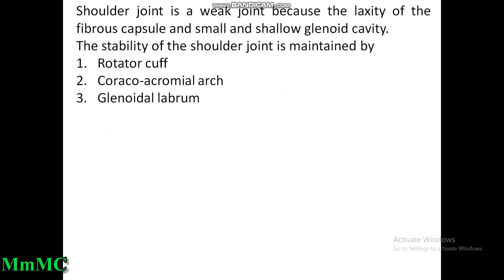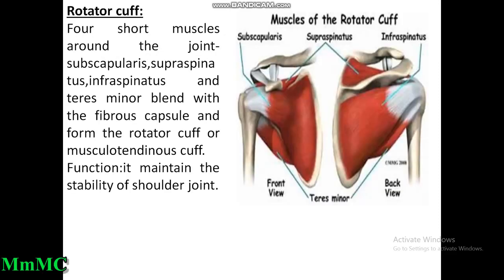The shoulder joint is a weak joint because of the laxity of the fibrous capsule and small, shallow glenoid cavity. Stability is maintained by the rotator cuff, coracoacromial ligament, and glenoid labrum. The rotator cuff — an important question for written exams — consists of four short muscles around the joint: subscapularis, supraspinatus, infraspinatus, and teres minor. These muscles blend with the fibrous capsule and form the rotator cuff or musculotendinous cuff; its function is to maintain stability of the shoulder joint.